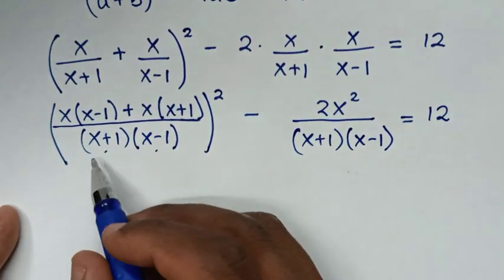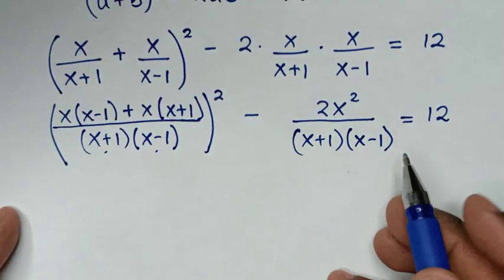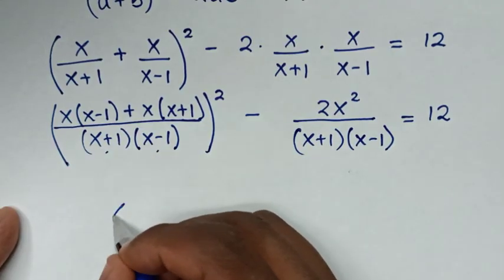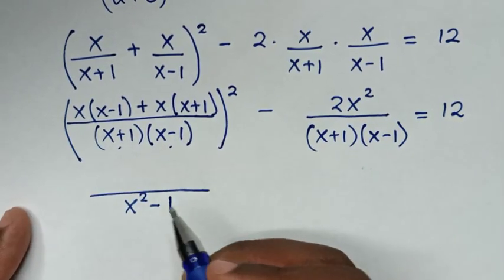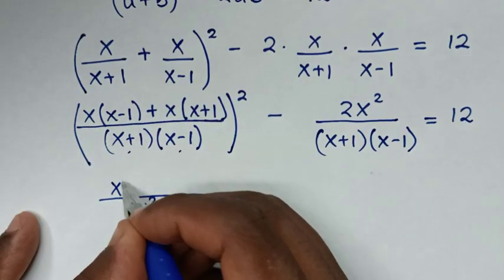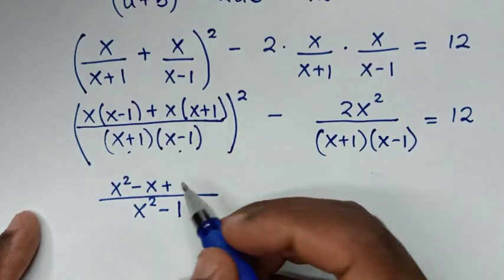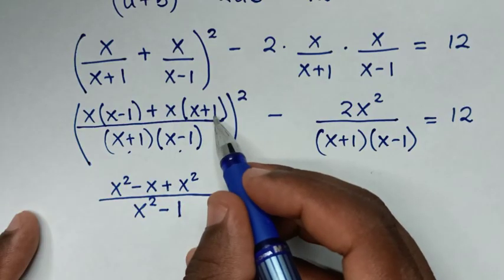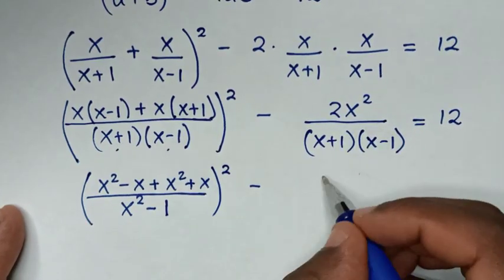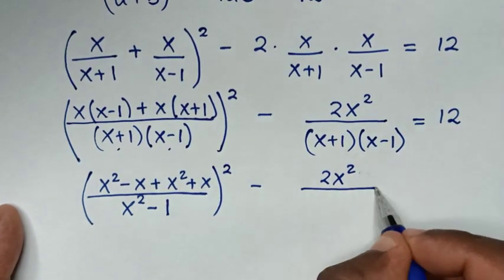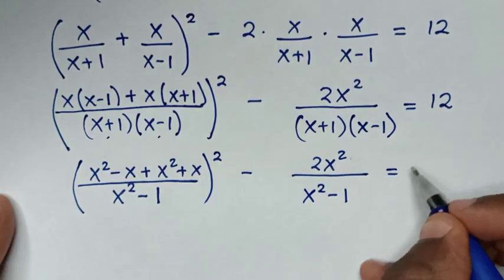In the denominator, (x+1)(x-1) is a difference of squares, equal to x² - 1. We expand the numerator: x(x-1) = x² - x, and x(x+1) = x² + x. So the bracket becomes (x² - x + x² + x)², which is (2x²)², minus 2x², all over x² - 1, equals 12.